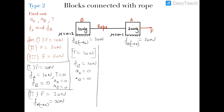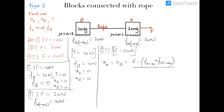Case 3: F equals 50 newtons. Both frictions combined add up to 40 newtons, but the applied force is 50 newtons, so the system moves to the right. Since A and B are connected by a rope, they have the same acceleration: a equals F minus (F_A max plus F_B max), all divided by total mass 30 kg.